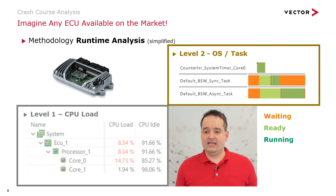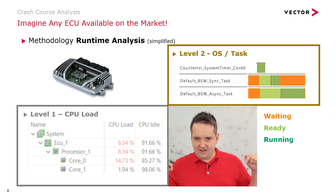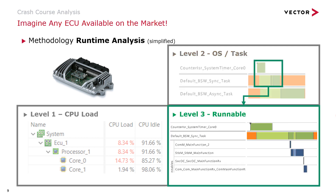Light green means the task is in the ready state to be executed. The scheduler then picks the highest priority task — first the synchronous task, then the asynchronous task — and sets it to running mode. At level 3, we investigate which runnables are executing. In this example you see first the COM-M main function running, then SDPM, SECOC, and then the COM-Main function Rx. With that we can tell you more about the runtime behavior of this ECU.